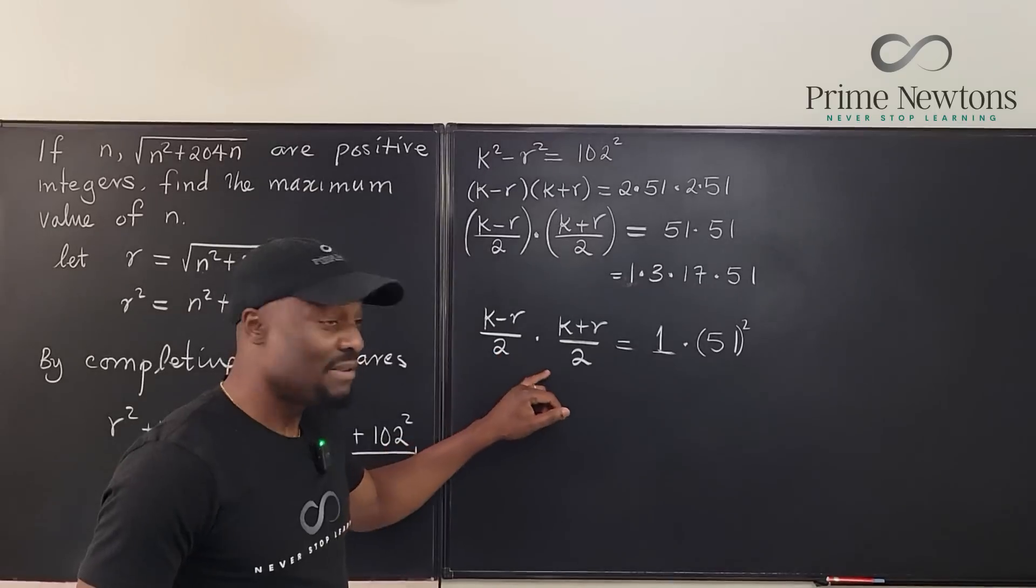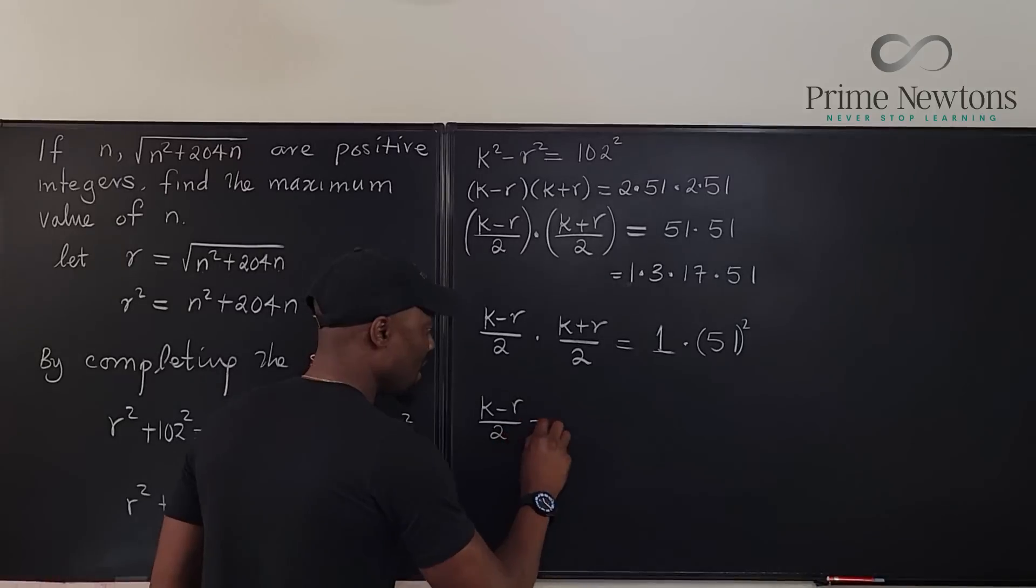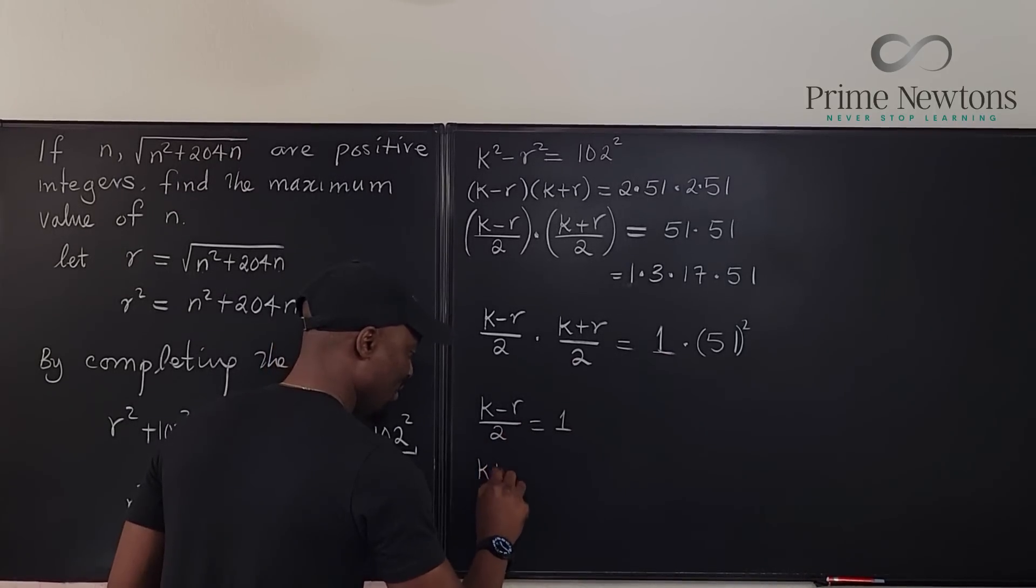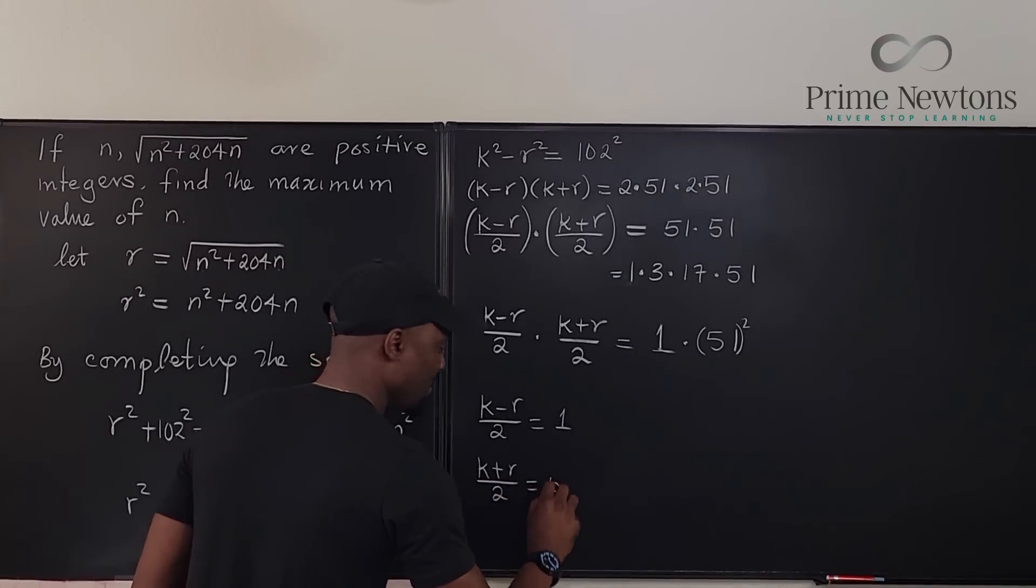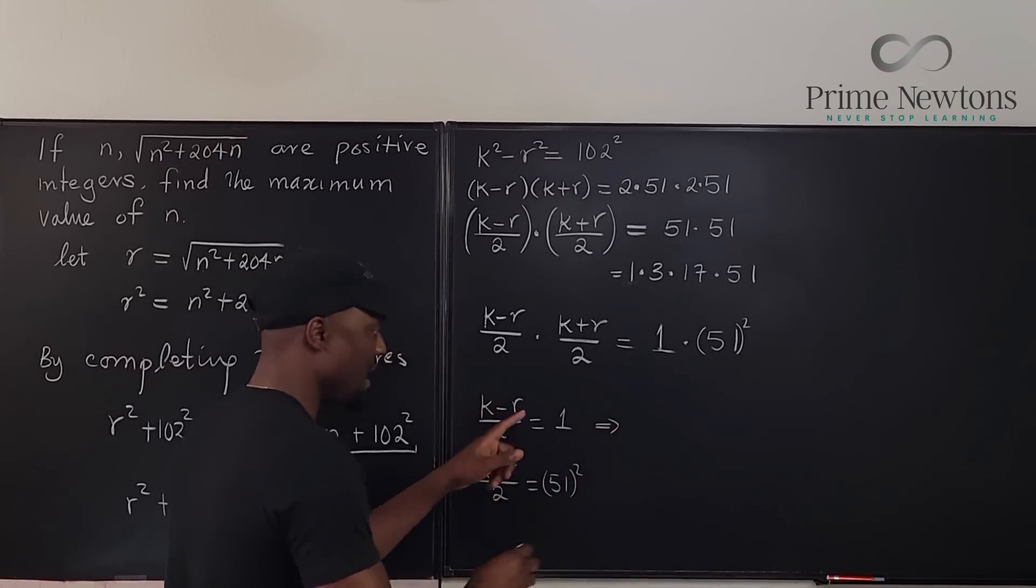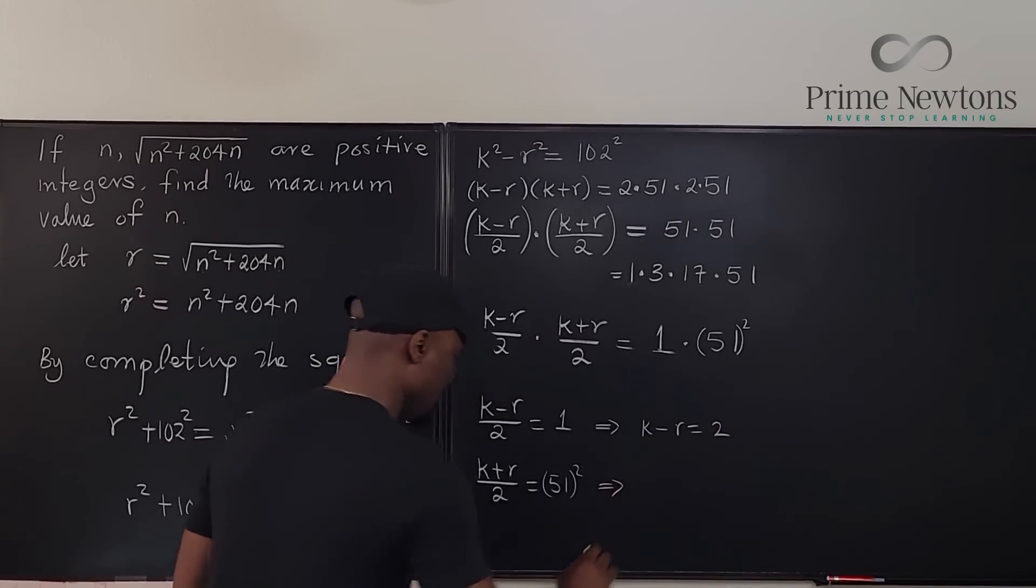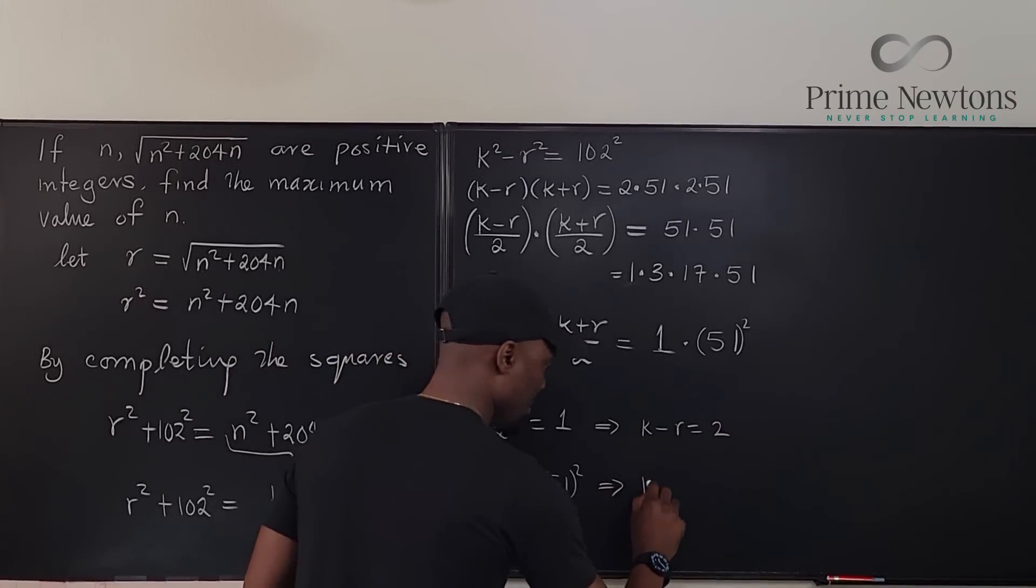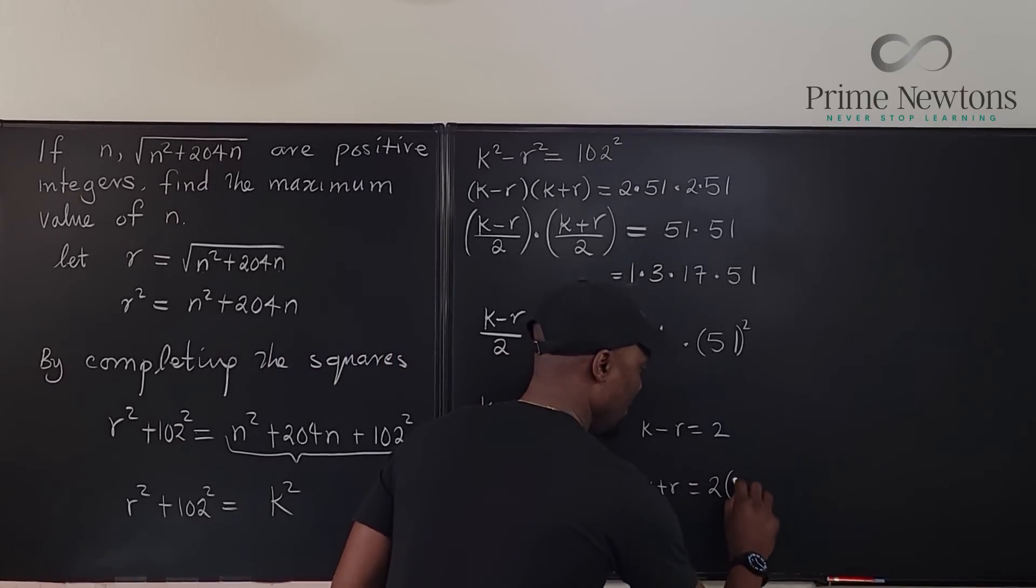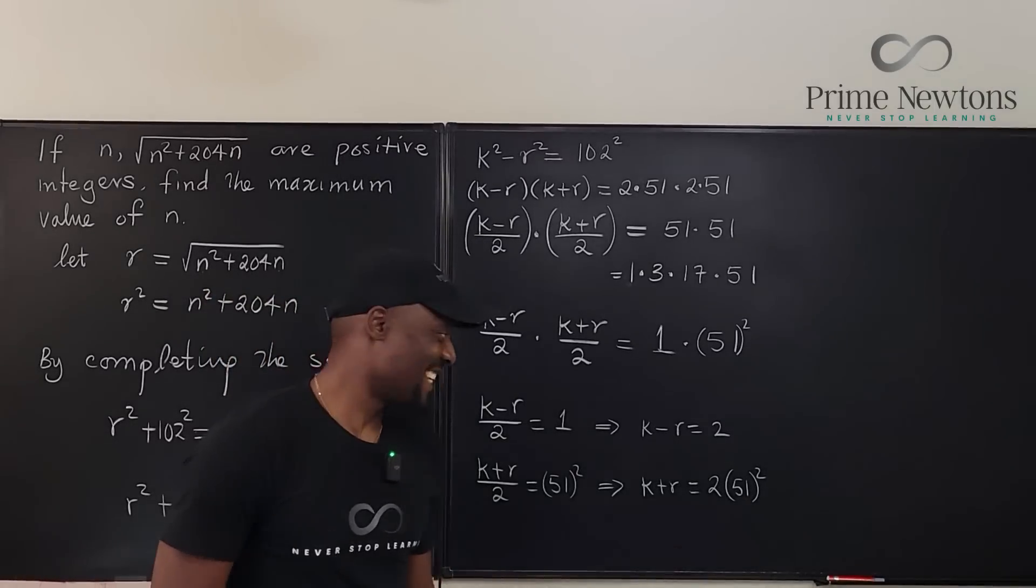I said that k minus r over 2 times k plus r over 2 must be the smallest on the left, multiplying the biggest on the right, 51 squared. So what does that mean? It means that I can have two equations: k minus r over 2 is equal to 1, and I have k plus r over 2 equals 51 squared. This means k minus r equals 2, and this means k plus r equals 2 times 51 squared. I still don't want to square that.